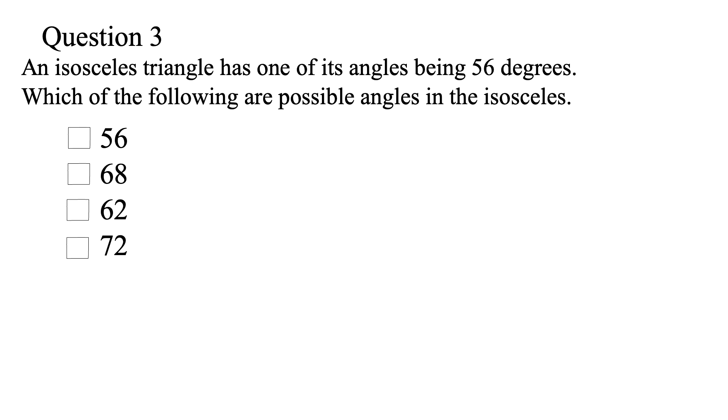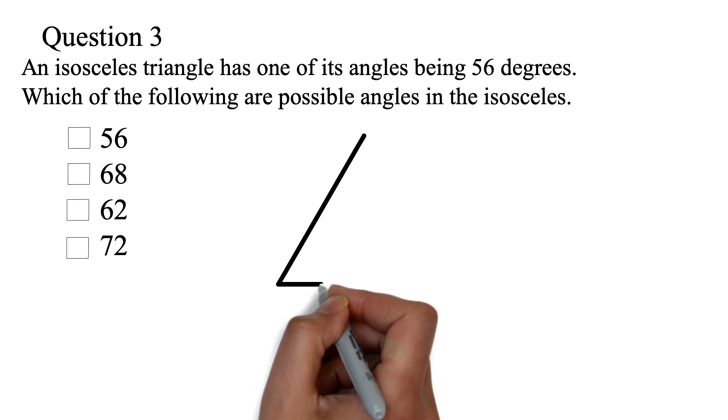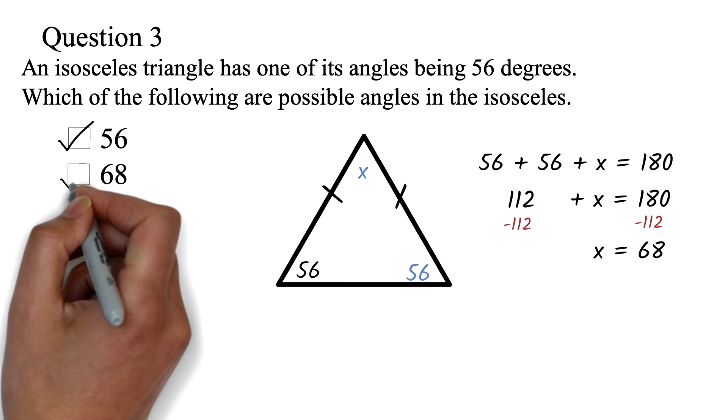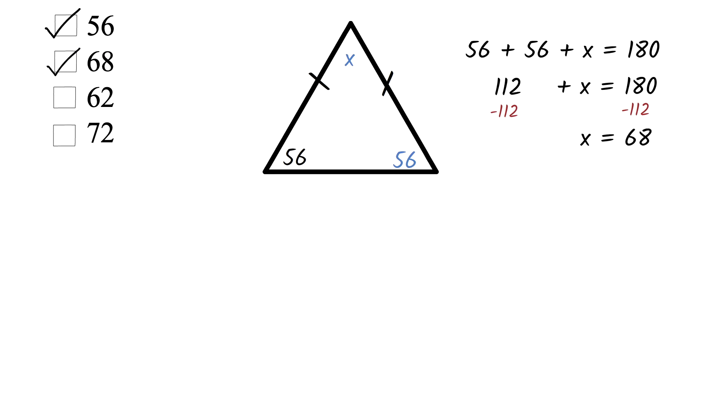If one of the angles of an isosceles triangle is 56 degrees, there are two scenarios. The first is that you have been given one of the paired angles. If that is the case, then the solution is just like the previous question. The other angle will be 56 degrees. We can call this other angle X then solve for X just like the previous question to get the third angle as 68 degrees. So we know that 56 and 68 are possible angles.